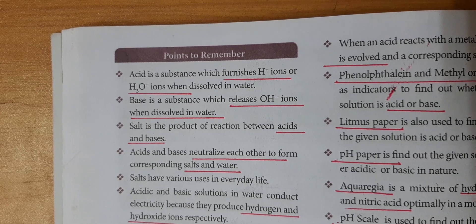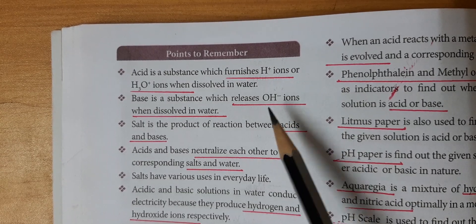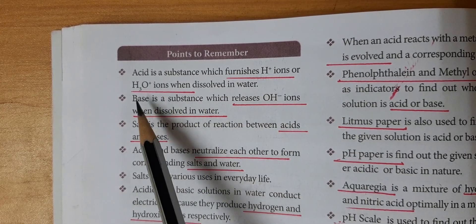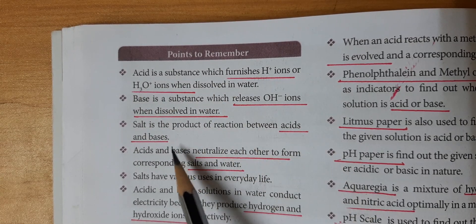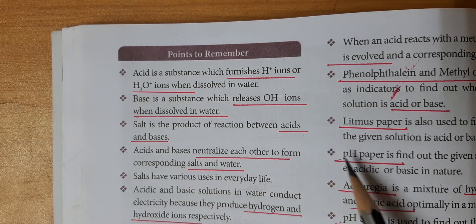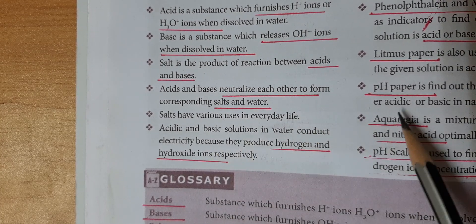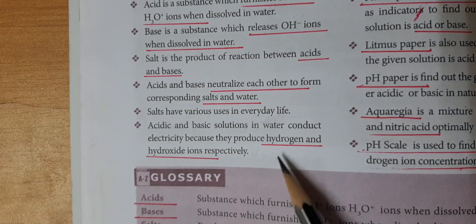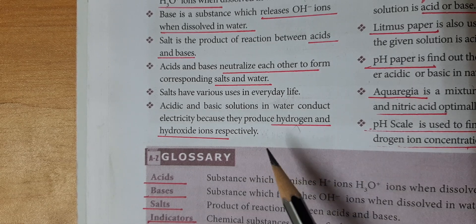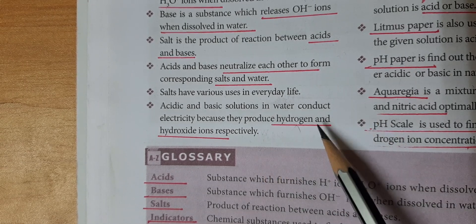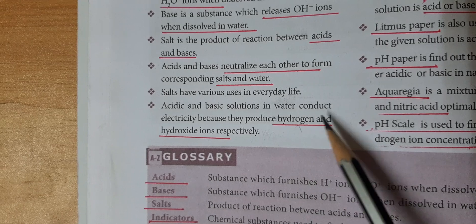Important points: an acid is a substance which furnishes H+ ions in solution; a base is a substance which gives hydroxyl (OH-) ions in solution. In solution, acid forms H3O+ (hydronium) ions. Salt is formed by the neutralization reaction of acid and base, forming salt and water. Acid and basic solutions conduct electricity due to the formation of H+ and OH- ions; only substances that ionize in solution conduct electric current.